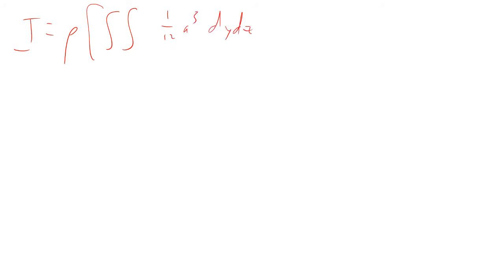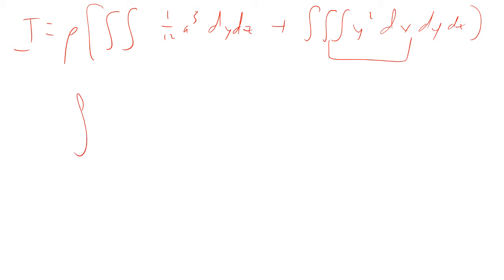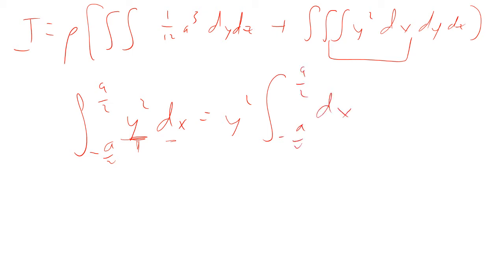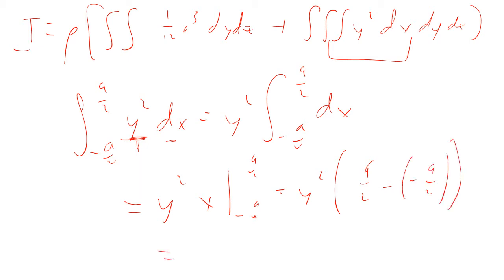So i is rho times the integral of one twelfth a cubed dy dz plus the integral of y squared dx dy dz. Now we have the integral from minus a over 2 to a over 2 of y squared dx. We're not integrating over y — we're integrating over x. Y doesn't depend on x, so it comes out of the integral. So this is just y squared times the integral from minus a over 2 to a over 2 dx, which evaluates to y squared times a. So this comes out to be a y squared.